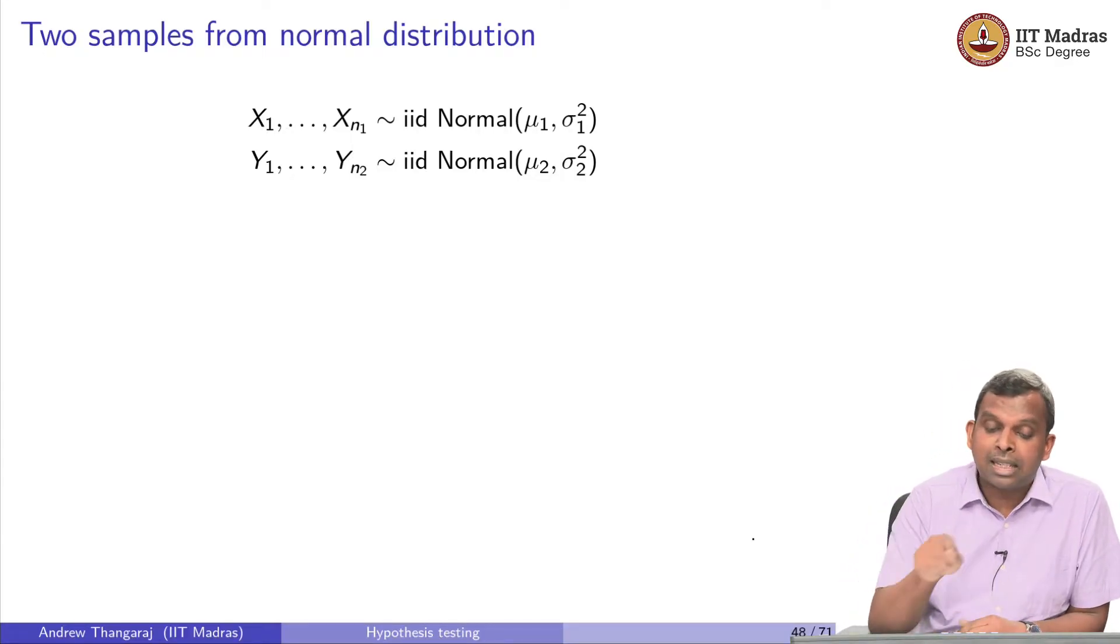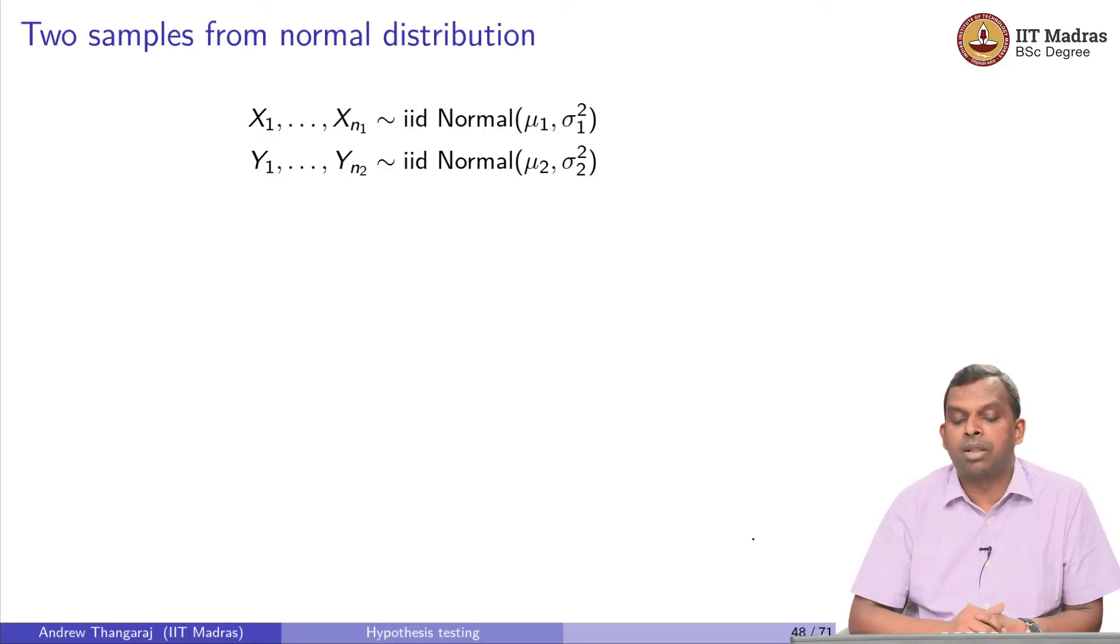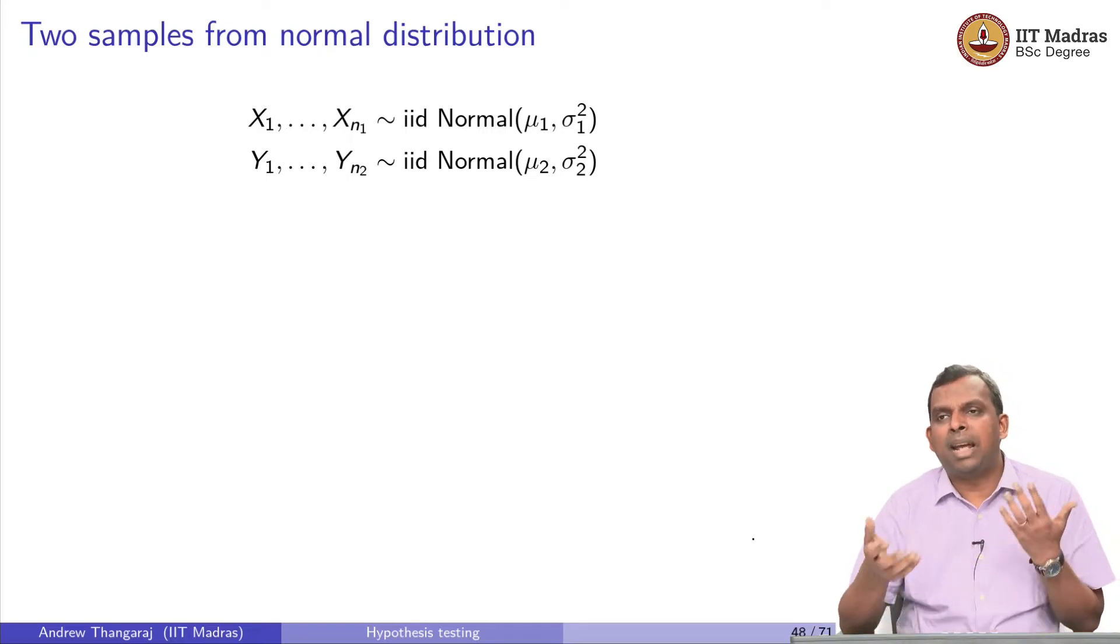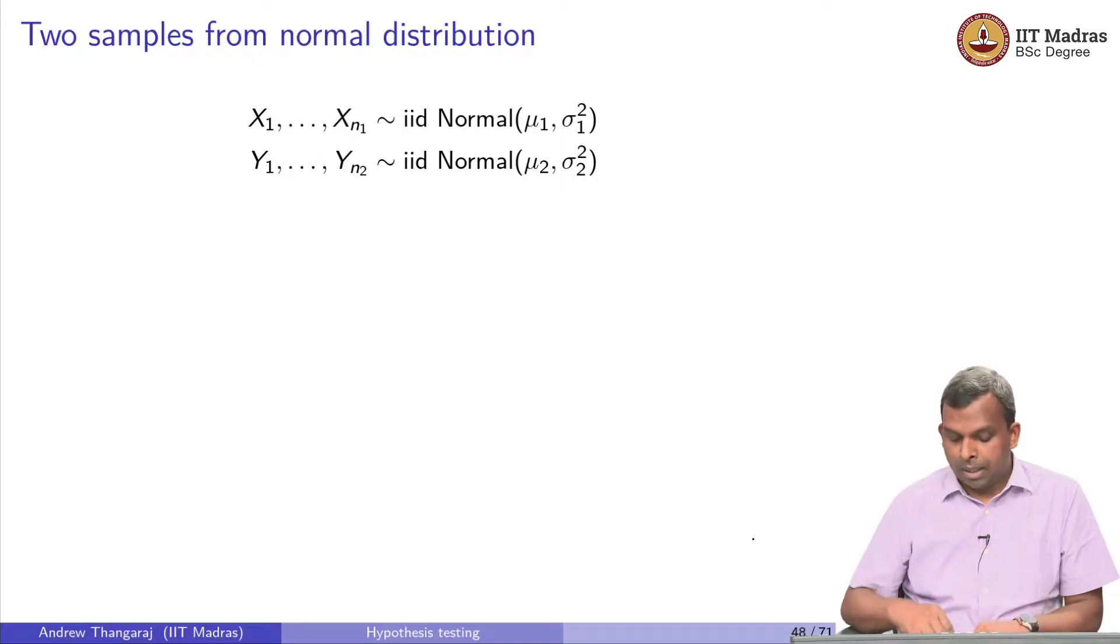We have N1 samples from the first distribution, let's say normal with mean μ1, variance σ1², and N2 samples from normal with mean μ2 and variance σ2². Normally you expect N1 and N2 to be similar, but it may happen that N1 and N2 are not similar also and there are good reasons why that may happen.